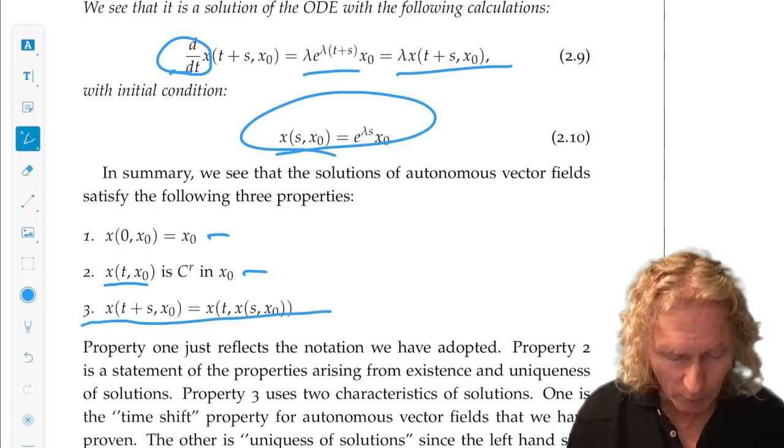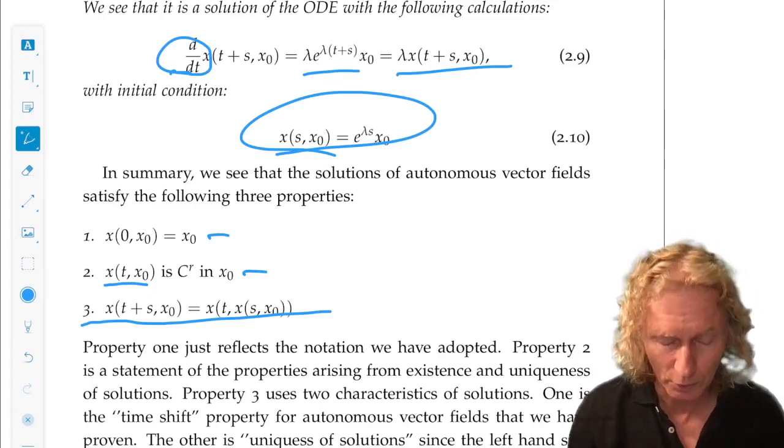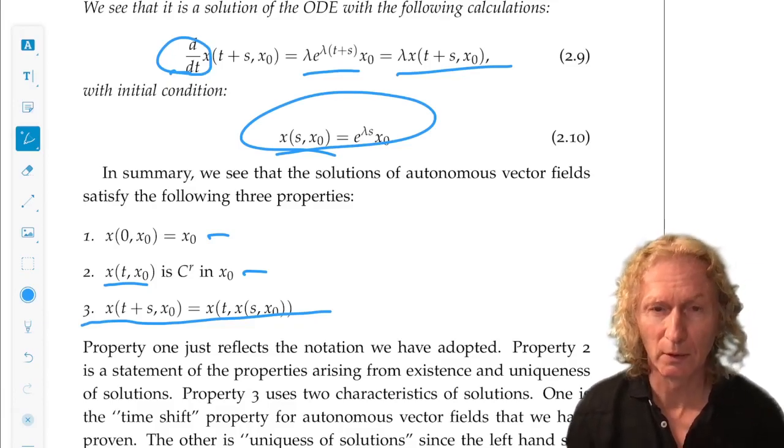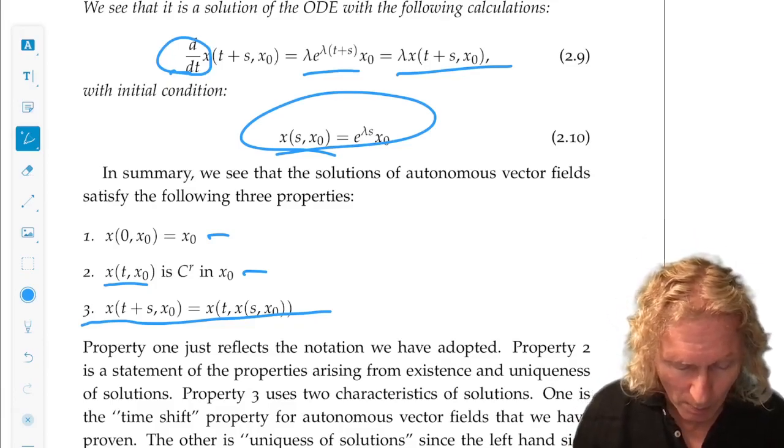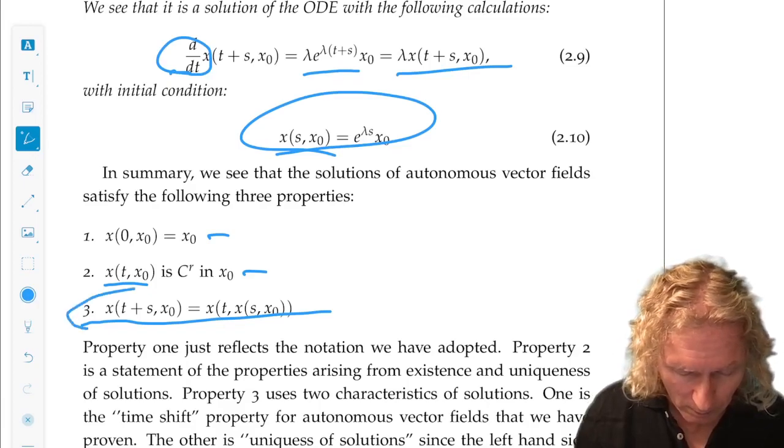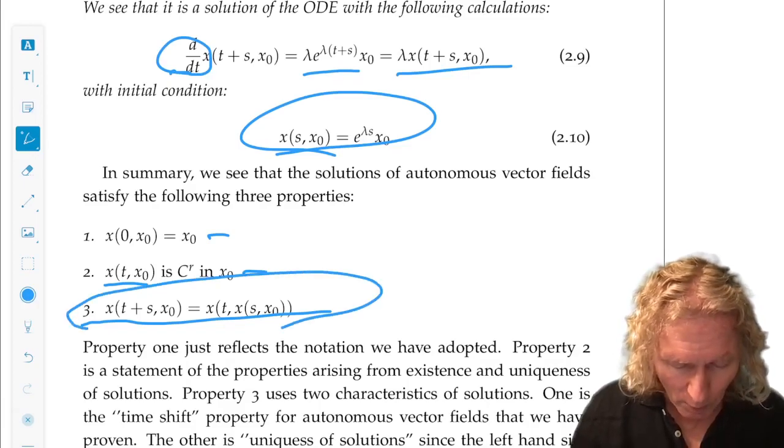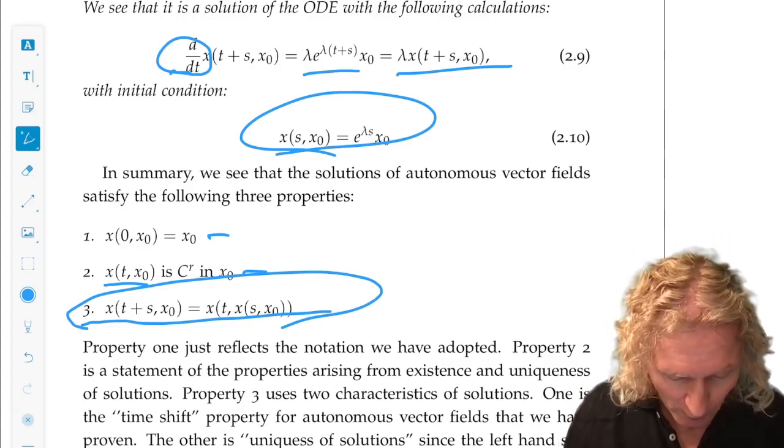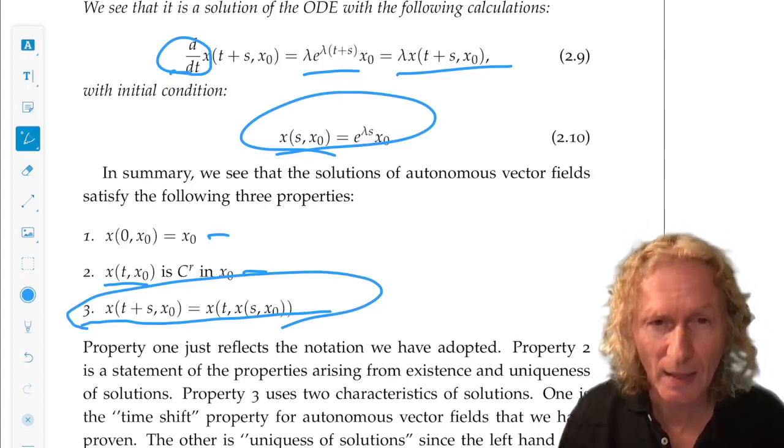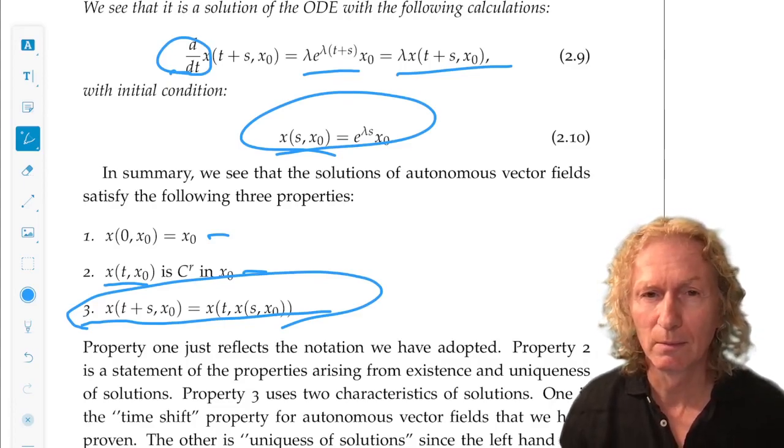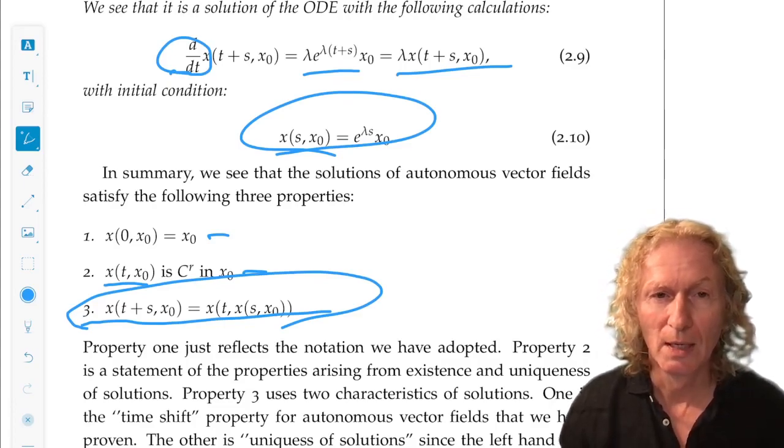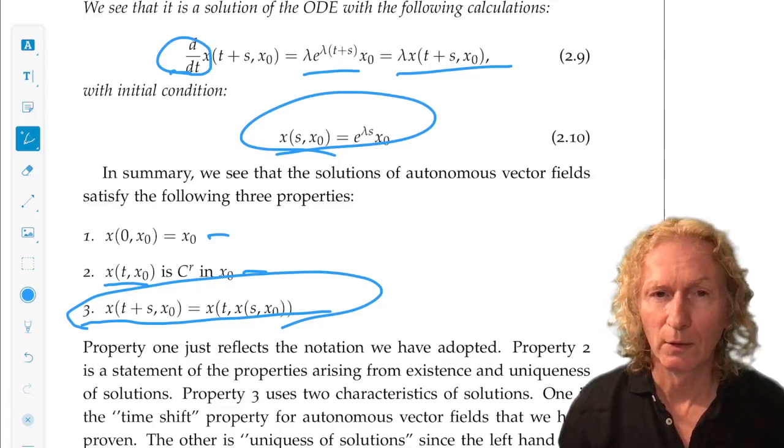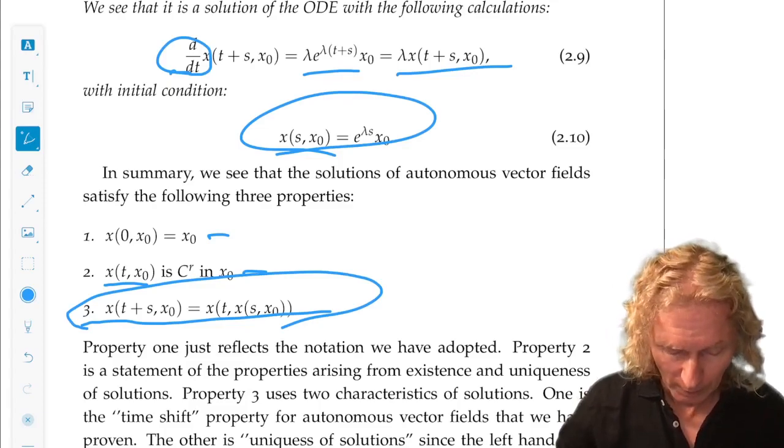Now, the last property is a little bit subtle and is worth thinking about. We know that x of t plus s is a solution. We know that time shifted solutions are solutions. We know that x of t is a solution. But, why are these two expressions equal? Because, at time 0, they satisfy the same initial condition. That's crucial. That's a subtle point. This is where we use the fact that we have uniqueness of solutions.